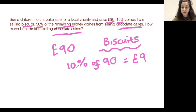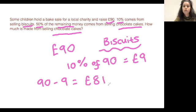So what we now need to do is figure out the next part of the question. Now this is very important. It says 50% of the remaining money comes from selling chocolate cakes. A common mistake here is to work out 50% of 90 pounds, but that is not right. We need to work out 50% of the remaining money. So if nine pounds is used for selling biscuits, the remaining money will just be 90 take away nine, and that will give you £81.